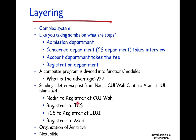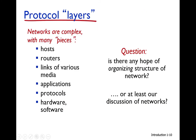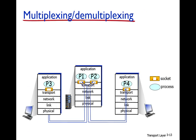Registrar-to-registrar communication is the transport layer's functionality. All letters going through CUI campus go through the registrar. Similarly, all letters delivered to IIU are received by the registrar, who then delivers the letter to the concerned user. This is the functionality of the transport layer.